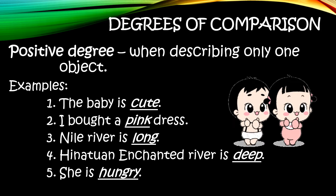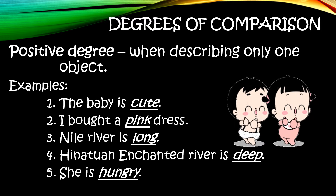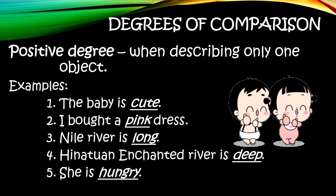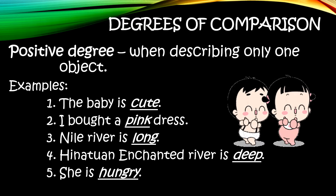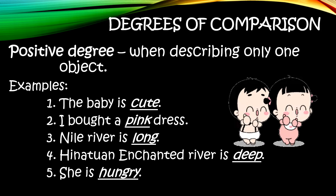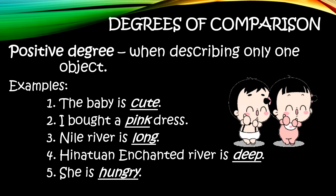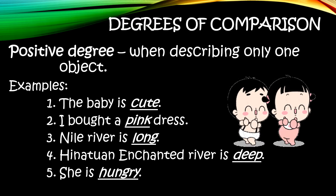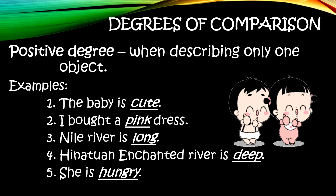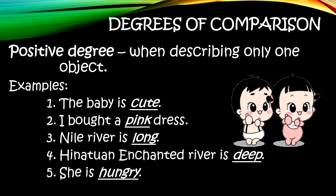Examples are: 1. The baby is cute. 2. I bought a pink dress. 3. Nile river is long. 4. Hinatuan enchanted river is deep. 5. She is hungry.